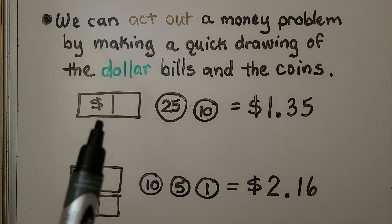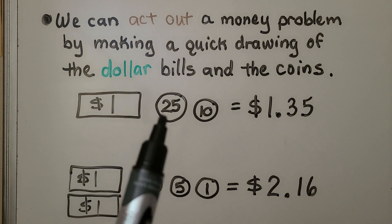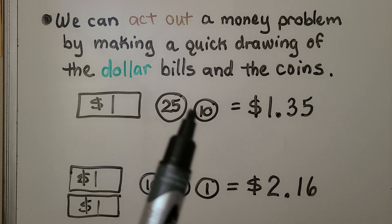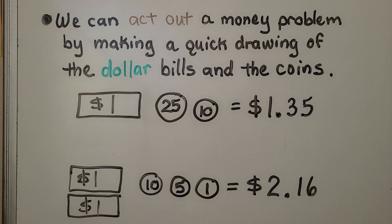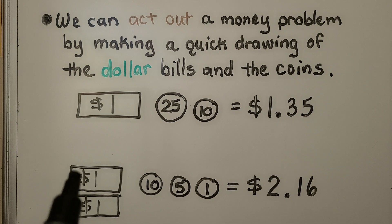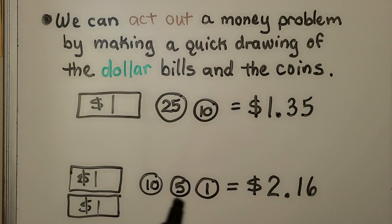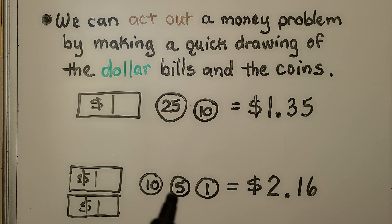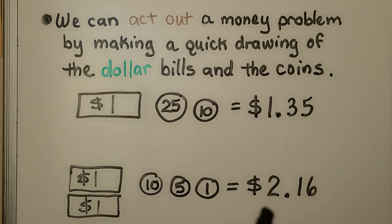For example, we have $1.25 and 10 more is $1.35. We can also draw two $1 bills for $2, and then 10 and five is 15, and one more is 16, so this would be $2.16.